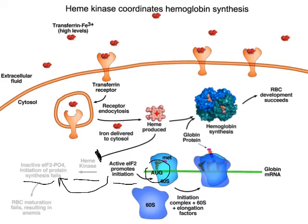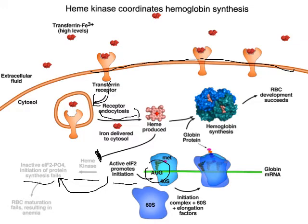Now we can think about this as a way to regulate the balance between heme production and globin production in response to whether or not we have enough iron. Somebody who has plenty of iron has a relatively normal number of transferrin receptors on the surface of the cell, and it's picking up transferrin loaded with iron and bringing it into the cell. Everything's humming along very nicely — the iron is being incorporated into the heme molecules, we're getting iron loaded into heme and heme loaded into globin, with a nice balance where we're translating just enough globin protein and making just enough heme to make a good, successful red blood cell.